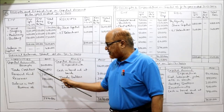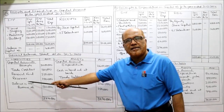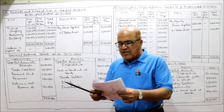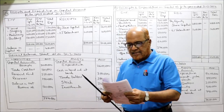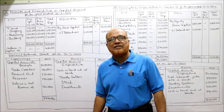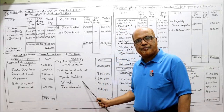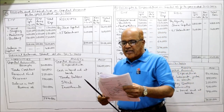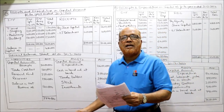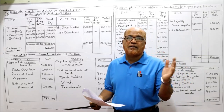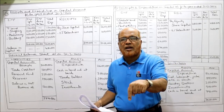Trade creditors (1 lakh 60 thousand) and reserves (1 lakh 50 thousand) are taken on the liability side of the general balance sheet. Trade debtors go on the asset side of the general balance sheet. Cash in hand and at bank 3 lakh 50 thousand, investments 1 lakh 50 thousand, and stock 2 lakh 40 thousand are all on the asset side. The expenditures to 31st March 2009 are last year's closing balances, which become the current year's opening balances.